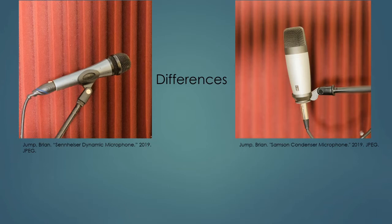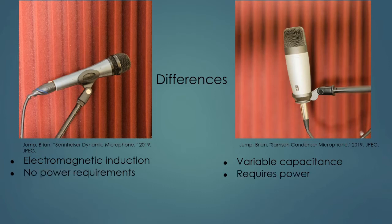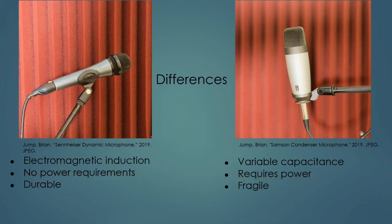Let's look at the differences between the two types of microphone. The one on the left, typically called a dynamic microphone, works on electromagnetic induction. The one on the right, typically called a condenser microphone, works off of variable capacitance. The dynamic microphone has no power requirements — it's just working automatically. The condenser microphone, on the other hand, requires a power source. Dynamic microphones are very durable, and condenser microphones are very fragile.